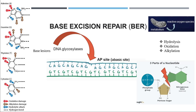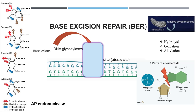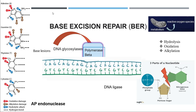The nitrogenous base is removed, but the wrong nucleotide without a nitrogenous base is still present and needs to be removed as well. For that we have another enzyme called AP endonuclease, which comes to the site and removes that nucleotide. Once that's done, a gap is generated that is filled by polymerase beta to add the correct nucleotide, and then DNA ligase joins it to the rest of the DNA strand — giving us a perfect DNA strand again.